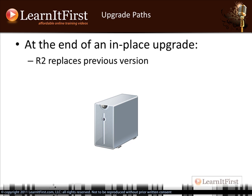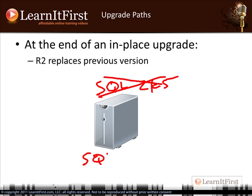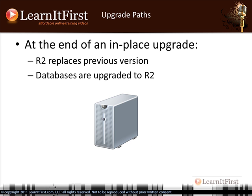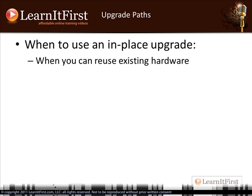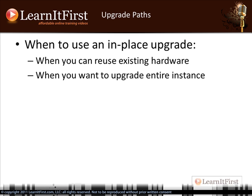At the end of your in-place upgrade, R2 replaces the previous version. For example, if you had SQL 2005, after running the upgrade you no longer have that — now you have R2 installed. The instance name doesn't change; clients don't have to change their connection strings at all. Your master, model, and user databases are all upgraded to R2. One instance, still there. Use this when you want to reuse existing hardware and replace the entire instance — in-place equals replacement.